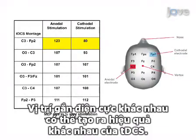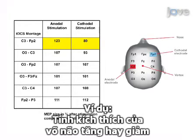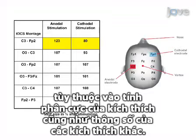Different electrode montages can vary the effects of tDCS. For example, whether cortical excitability is increased or decreased is dependent on stimulation polarity as well as other stimulation parameters.